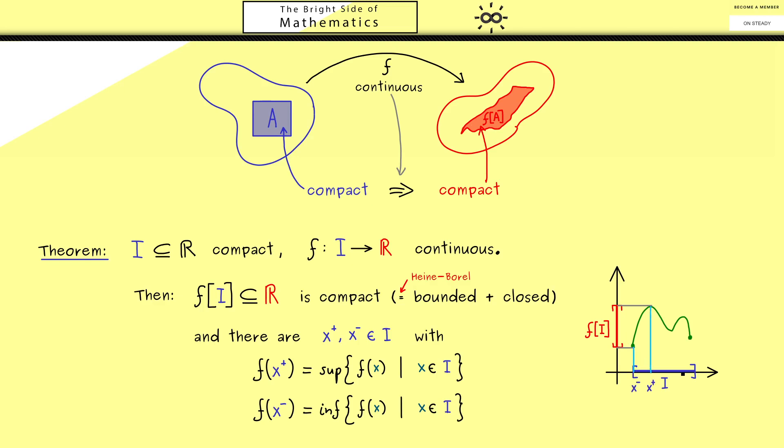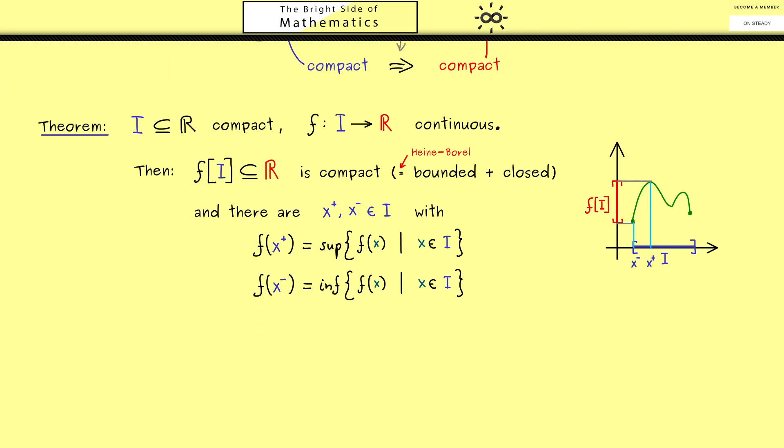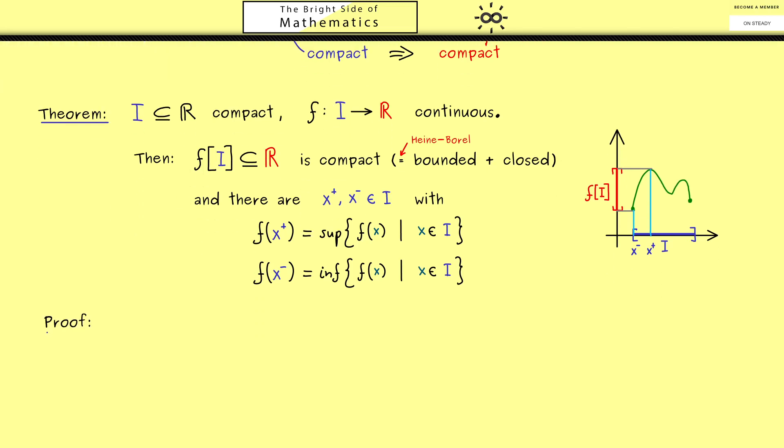Now for our example on the right hand side we find x minus here and x plus here. They don't need to lie on the boundary of I and they also don't need to be unique. Of course there could be different numbers that get the same value. Now I think we are ready for the proof of this statement. For this let's recall the definition of a compact set again.